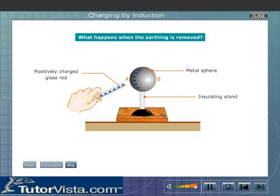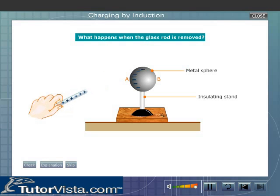On disconnecting the conductor from the sphere, only the negative charges remain on the sphere. On the removal of the glass rod, negative charges spread uniformly on the metal sphere.